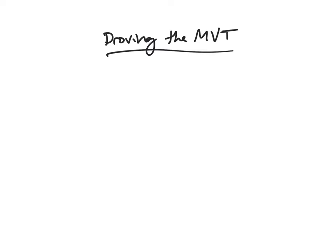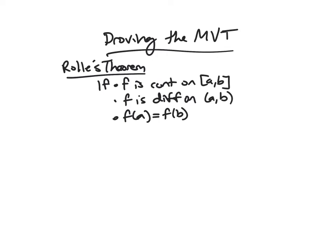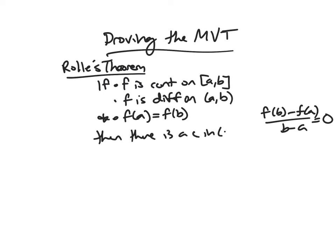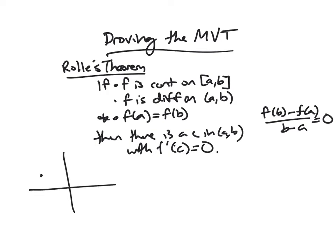Next, we're going to prove the Mean Value Theorem. To do that, we first look at Rolle's Theorem, which is a specific case of the MVT where the endpoints have the same value, so f of a equals f of b. Under the same continuity and differentiability conditions plus this extra one, the average rate of change f of b minus f of a over b minus a equals 0, and so the conclusion is there is some C in the interval with f prime of C equal to 0. Geometrically, you have a function with equal endpoint values and somewhere there's a horizontal tangent line on the open interval inside.